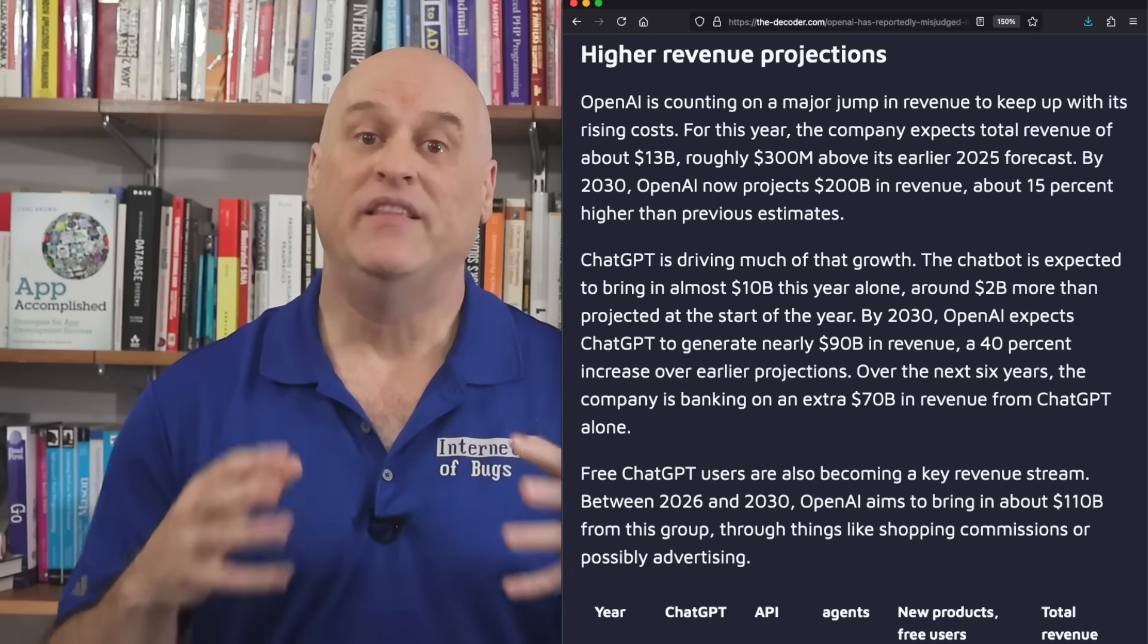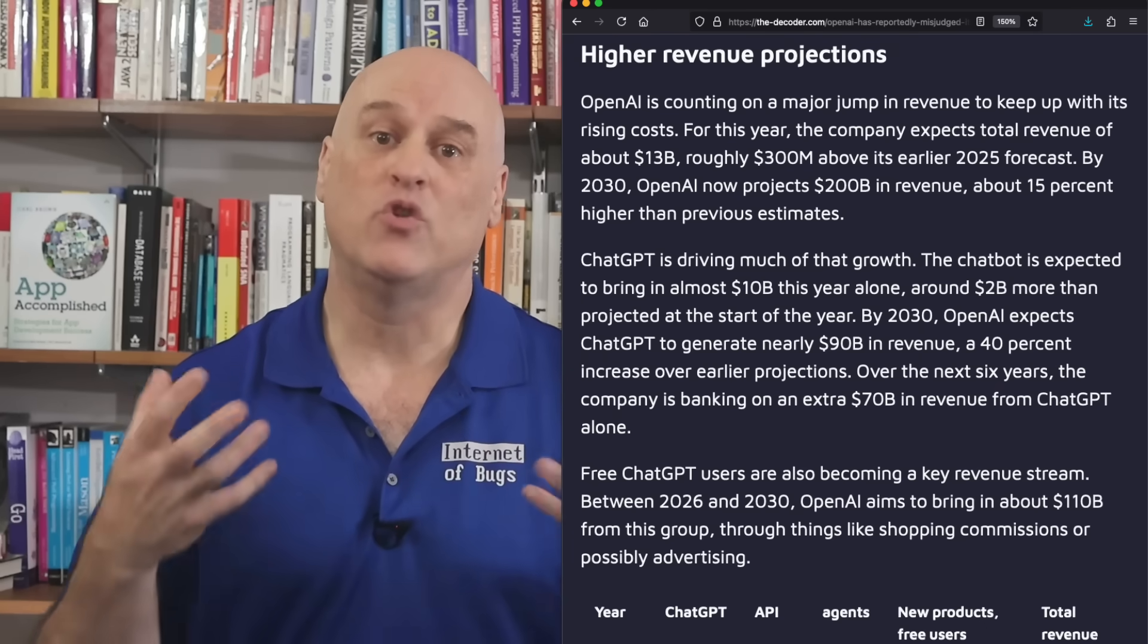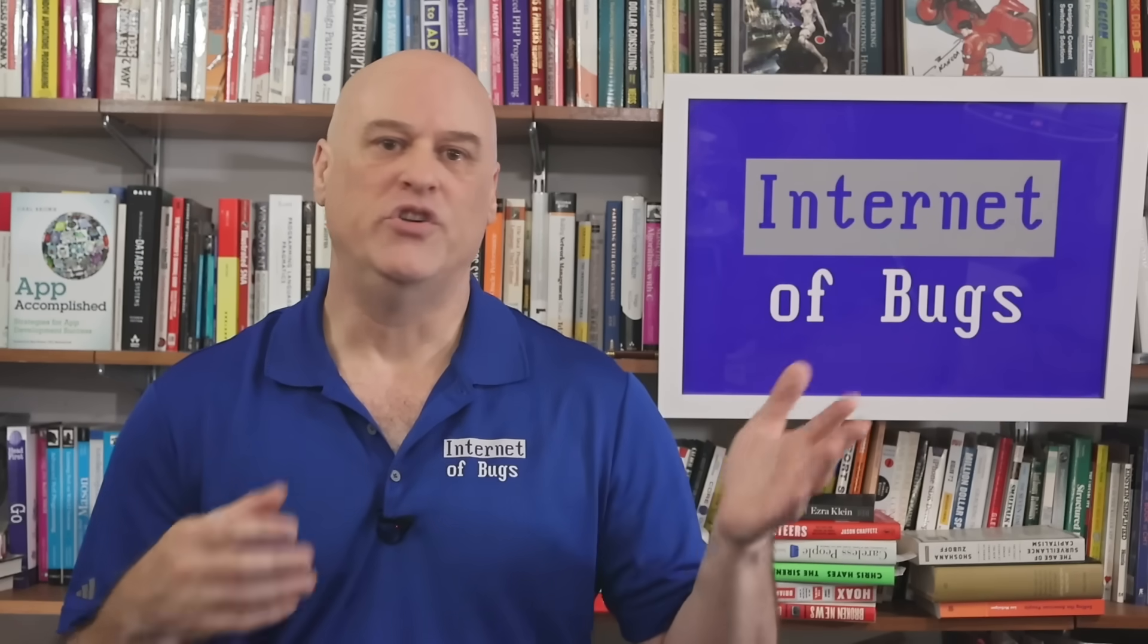Now remember, it's not like the claim was that GPT-5 would be a little bit better, or somewhat better, or ambiguously better, or better in some ways but worse than others. The industry not only needs for each generation of AIs to be better than the previous generation, it needs to be exponentially better. Because they're promising investors, the money they make, will grow exponentially through 2030 at least.